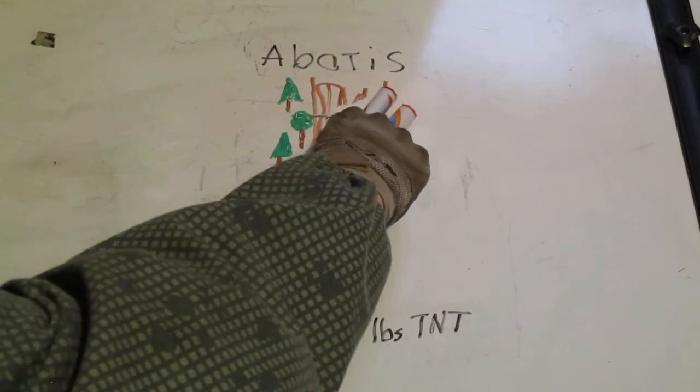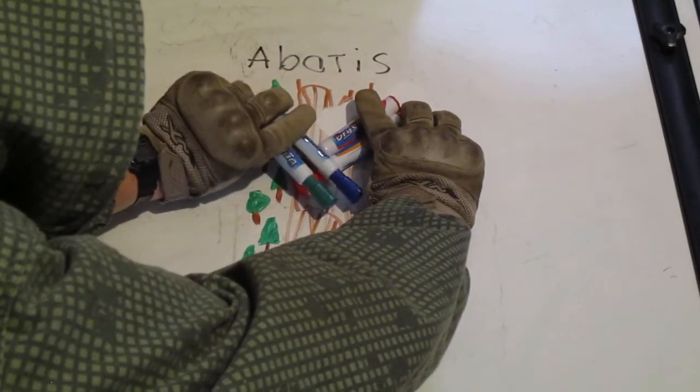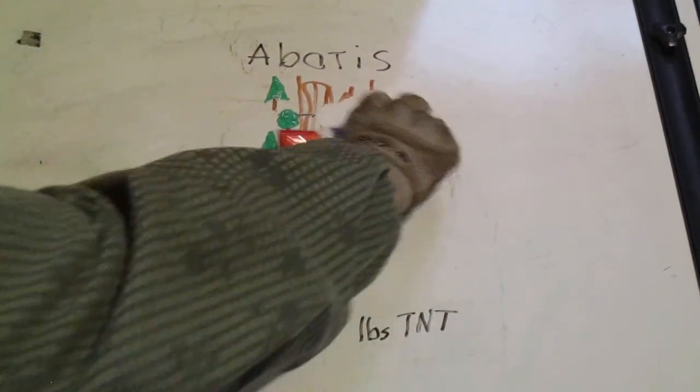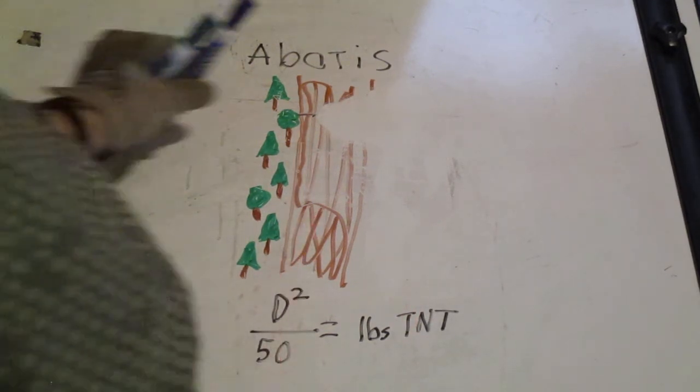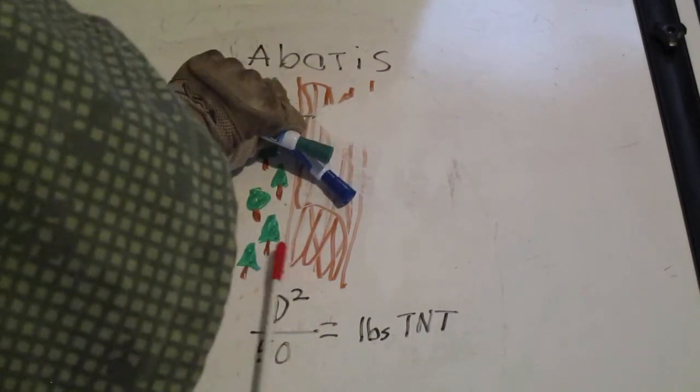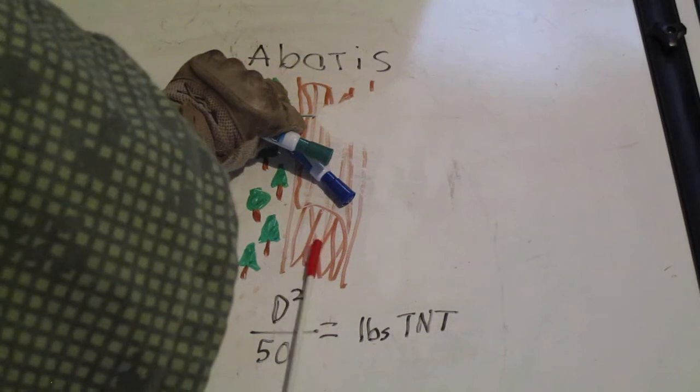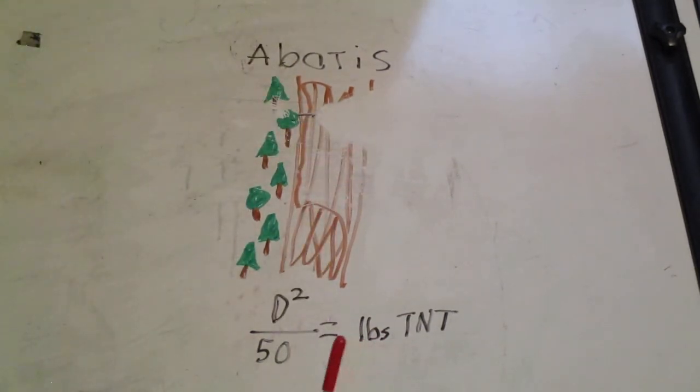So then you'll have trees crossing like this going down the roadway. You want the trees to fall in the direction of enemy movement. So if the enemy's coming from this direction, we want the trees to fall down like that. As the enemy would try to ram the obstacle, it's just going to push the trees together making an even worse mess.